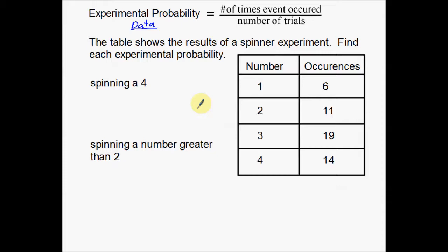So I'll go through this example real quick. The table shows the results of a spinner experiment. Find each experimental probability. So you took a spinner which had the numbers 1, 2, 3, and 4 on it. And you spun it a whole bunch of different times. You got 6 times you got a 1, 11 times you got a 2, 19 times you got a 3, and 14 times you got a 4.